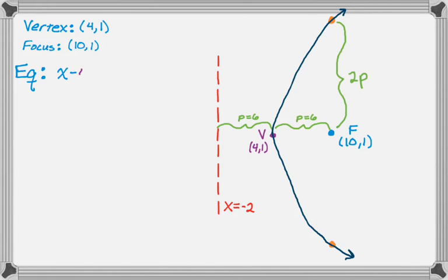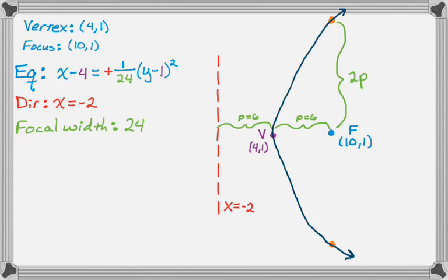And now I'll write down the equation. So it's x minus 4 equals positive, because it opens to the right, 1 over 4p. So if p is 6, 4p is 24. And then the quantity y minus 1 squared. I know the directrix, which I already figured out, is x equals -2. I know the focal width is 4p, which I can either calculate again, or I can look at the equation, or whatever, a lot of ways to get that at this point. The endpoints of the latus rectum, so you're moving up and down this time, so you start at the focus, so it's 10, comma, 1 plus or minus 12. And then the eccentricity is 1.